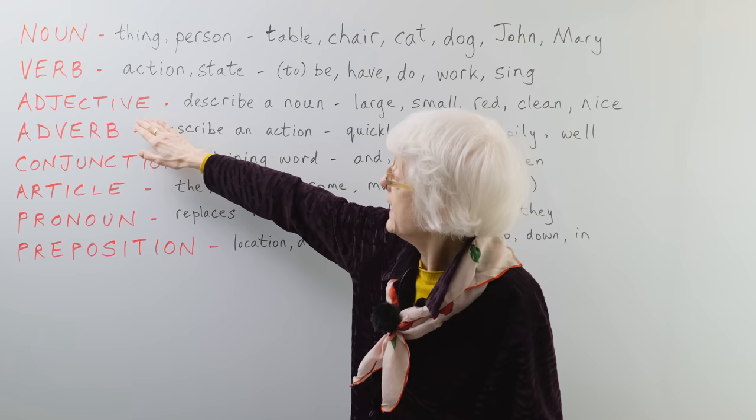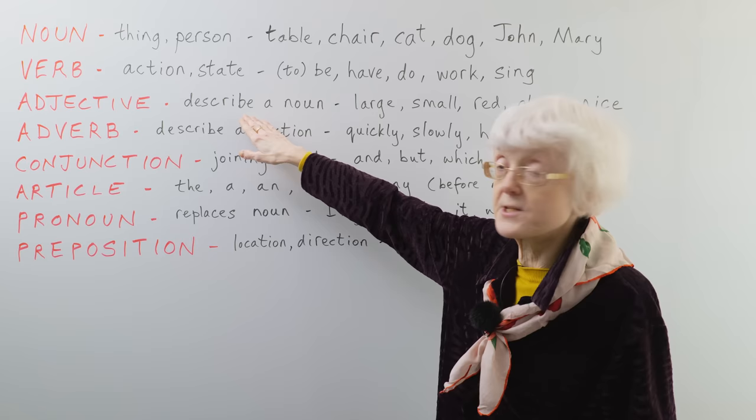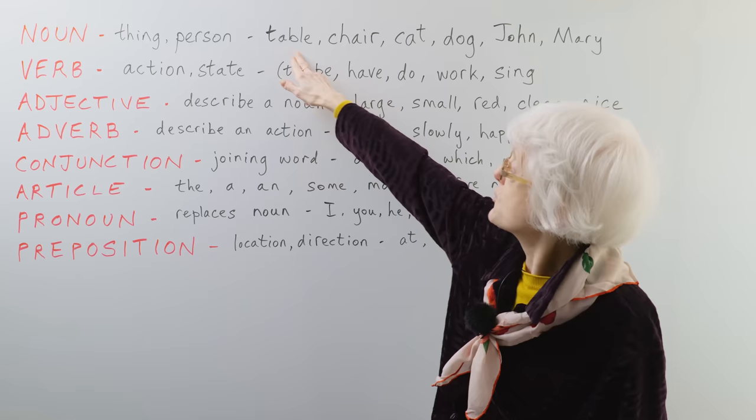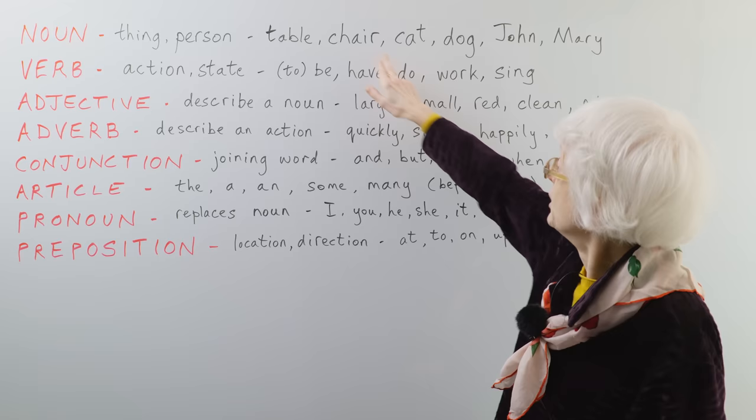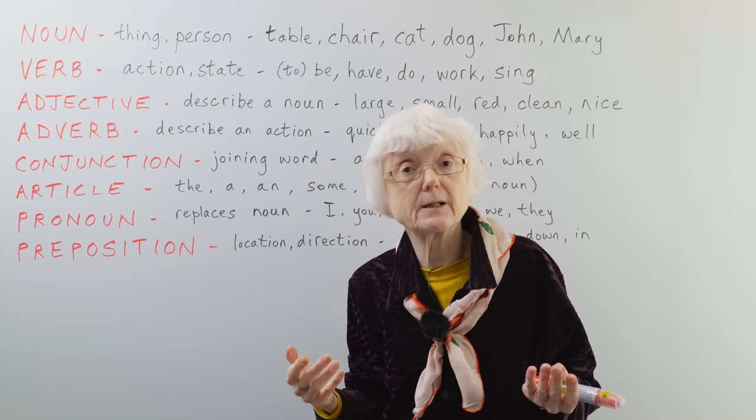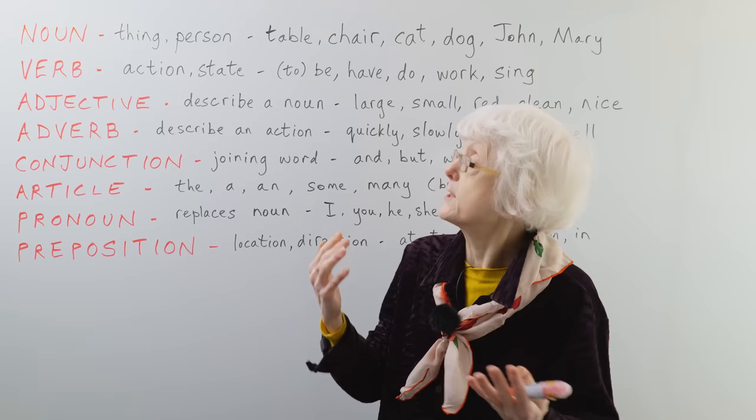Then an adjective describes a noun. Back to the nouns. Large, so large table, small, small chair. It goes in front of the noun. Unlike in a lot of other languages, in English, the adjective comes before the noun.